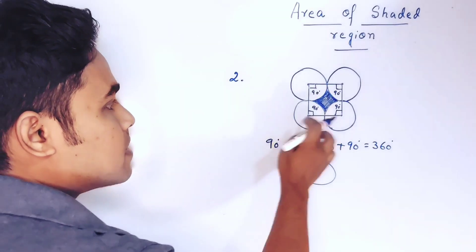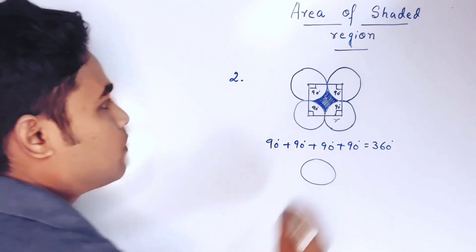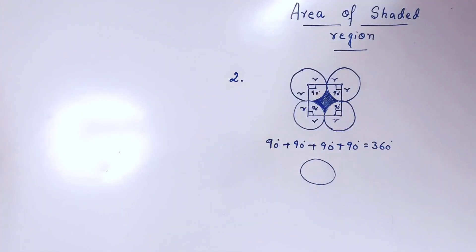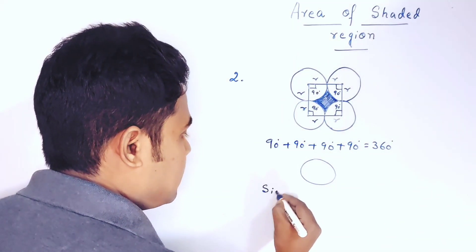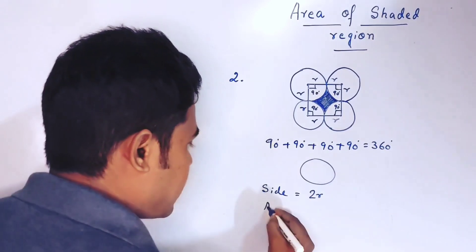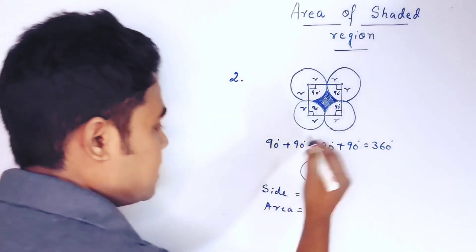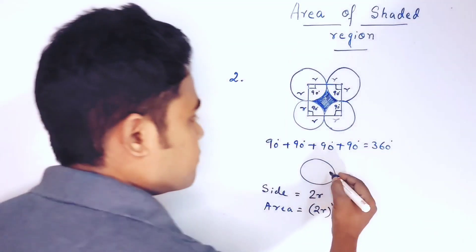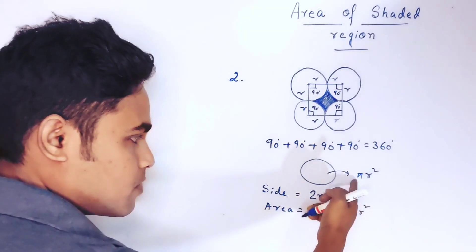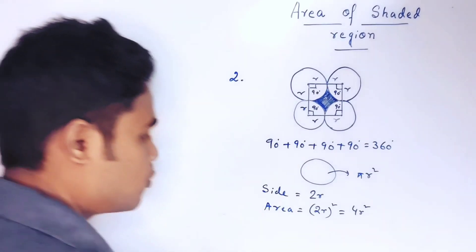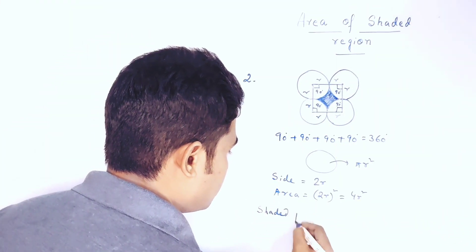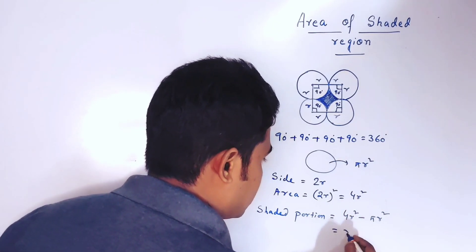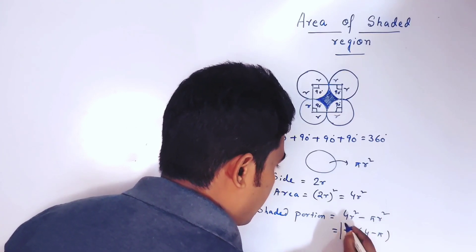Let the radius of each circle be r, assuming all circles have equal diameter. The length of each side of the square is 2r. The area of the square is side² = (2r)² = 4r². The area of the circle is πr². So by subtracting: area of shaded portion = 4r² − πr². Taking r² as common, this becomes r²(4 − π), which is our required formula for diagram two.